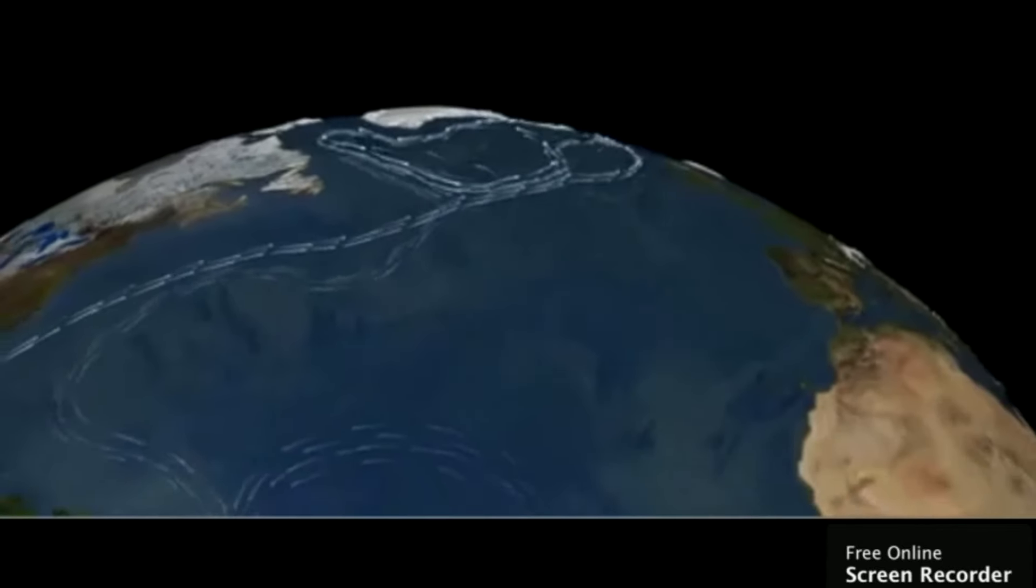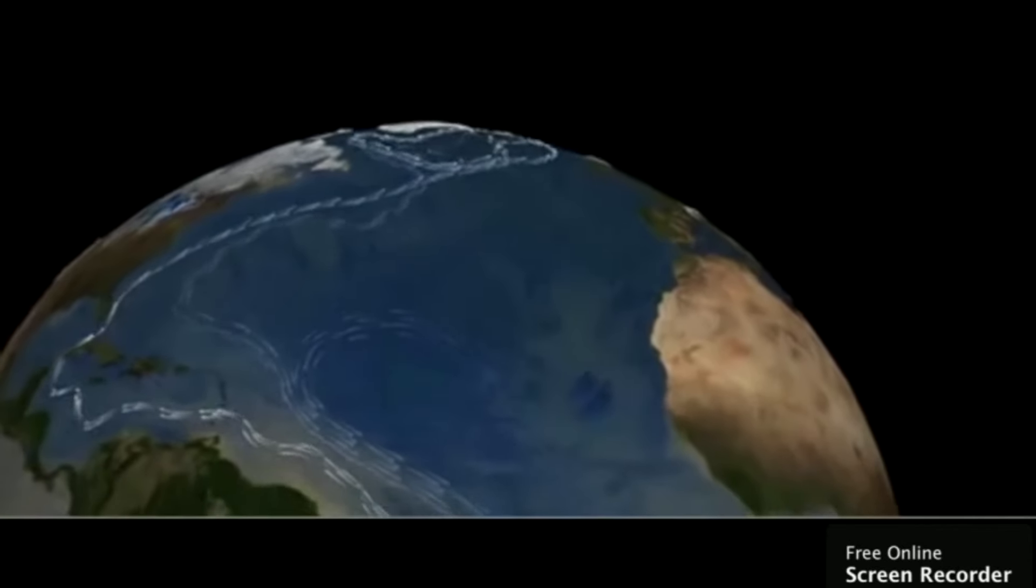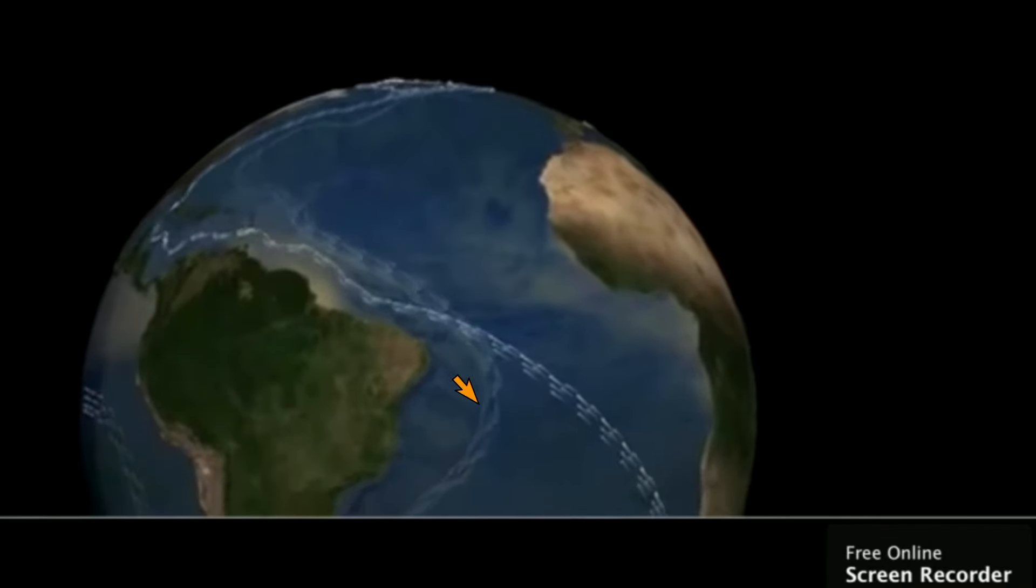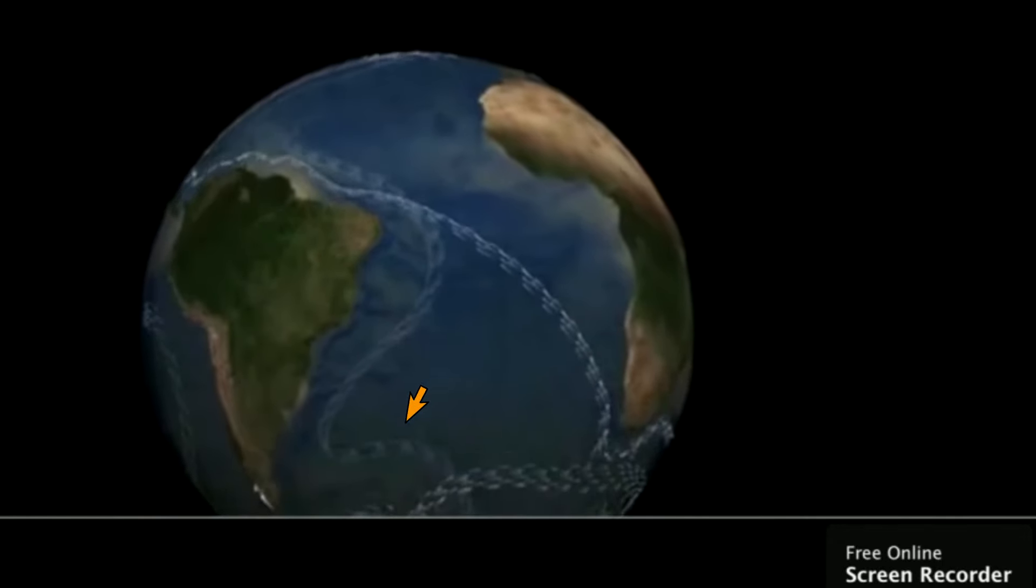Surface water moves in to replace the sinking water and creates a current that moves south towards the equator down towards the ends of Africa and South America.